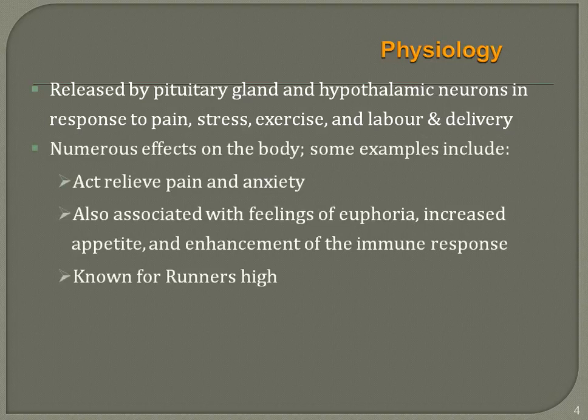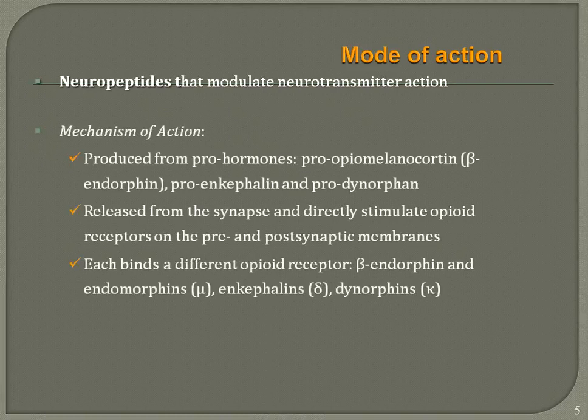Endogenous opioids have numerous effects on the body. Examples include relief of pain and anxiety, feelings of euphoria, increased appetite, and enhancement of human response — known as the 'runner's high.' They are produced from pro-hormones: pro-opiomelanocortin (beta-endorphin), pro-enkephalin, and pro-dynorphin.